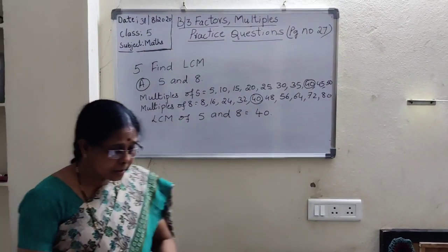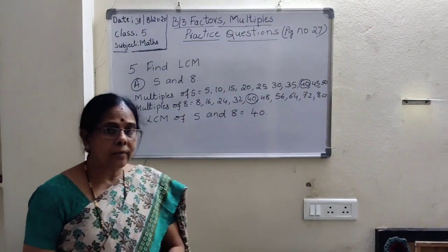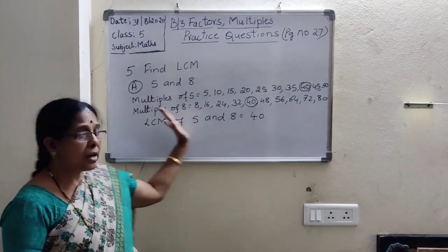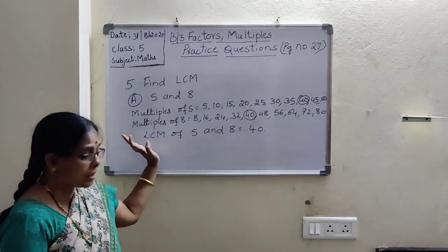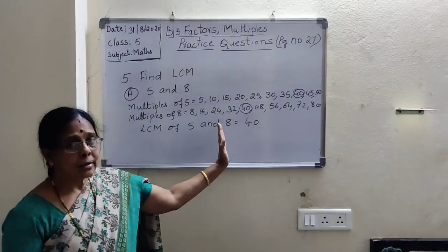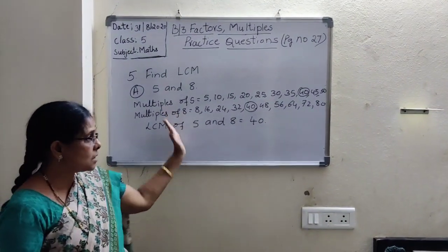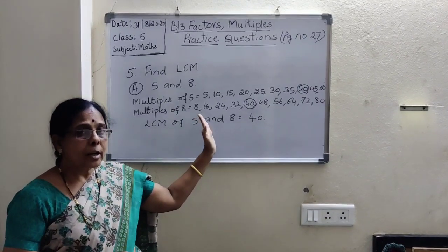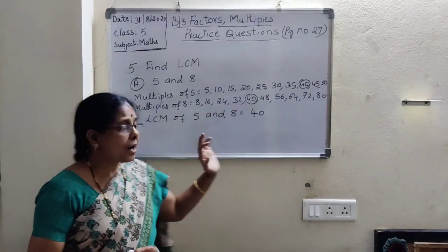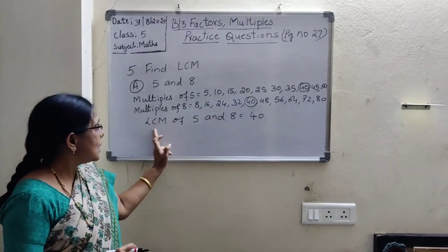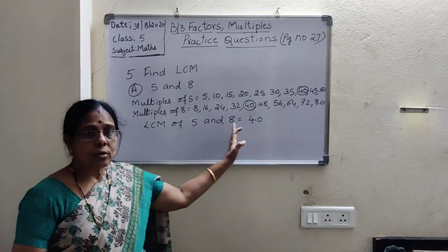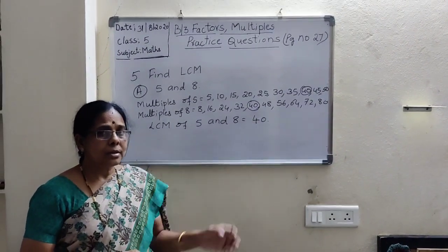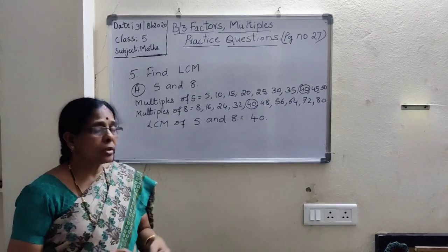Second bit: LCM of 2 and 5. What you will do? Write the multiples of 2 and 5, then find the least common multiple, circle that number, and write LCM of 2 and 5 is equal to that number. Second bit you do at home.